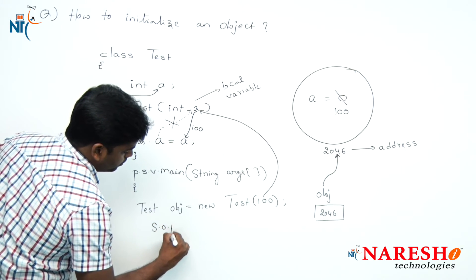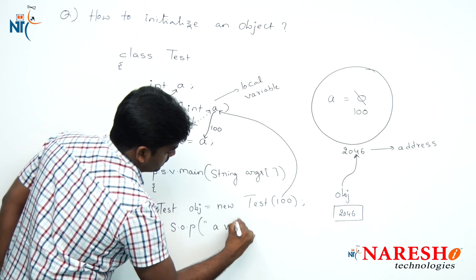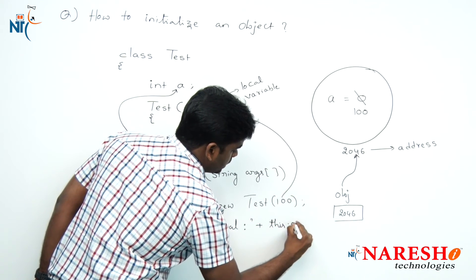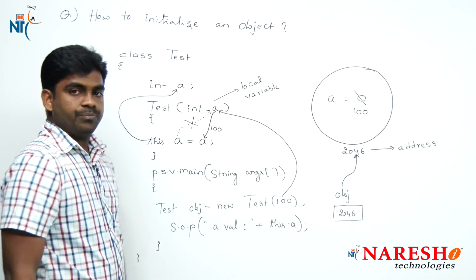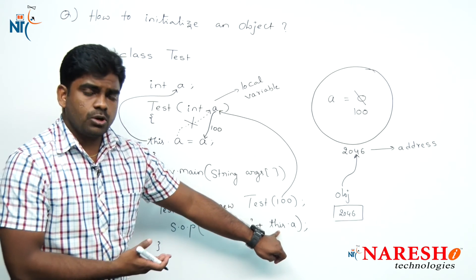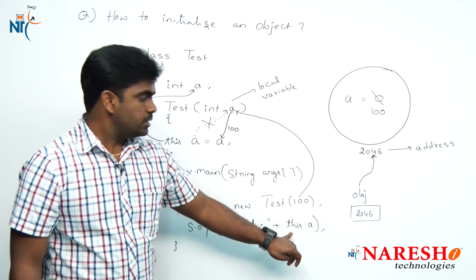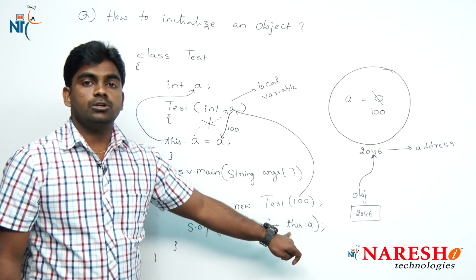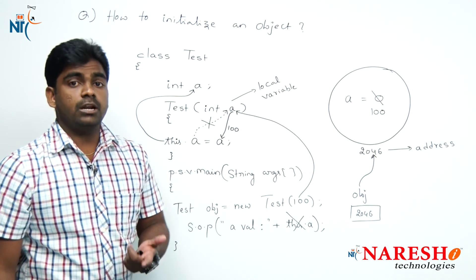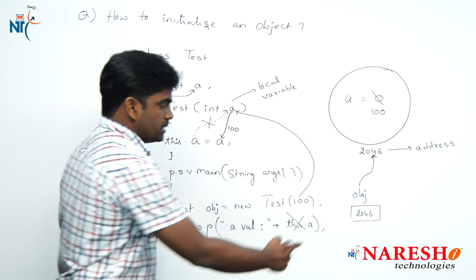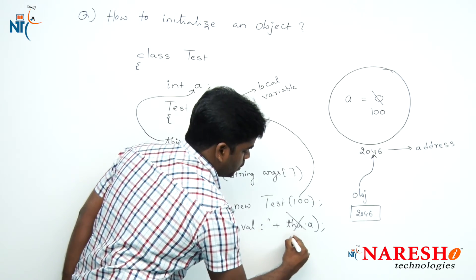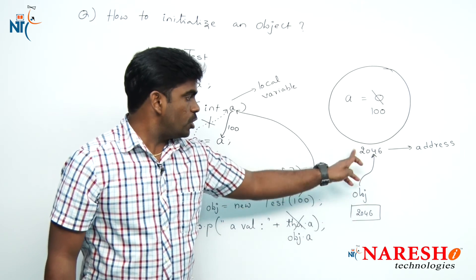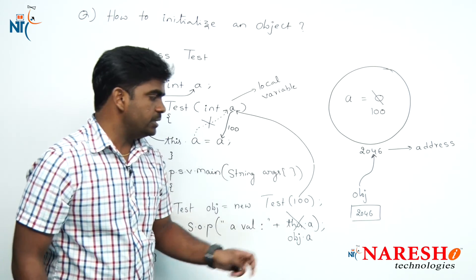Now, if you want to print that 'a' value, how do we access it? Can we use 'this.a'? No, it is not allowed — even though 'this' is also an object address, it is not allowed because you are in a static area. The main method is a static area, and inside a static area you cannot use the 'this' keyword. So how can we access it? Using the object reference variable, because OBJ is pointing to this object — OBJ.a. OBJ means 2046, and .a means whatever value is inside the object, so it will print 100 clearly.